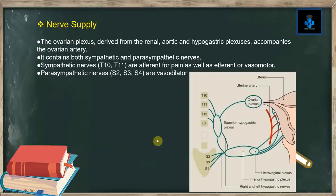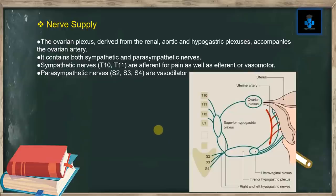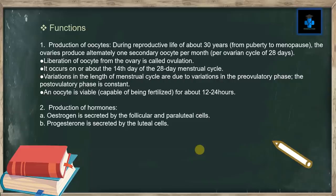Nerve supply: the ovarian plexus, derived from the renal, aortic, and hypogastric plexuses, accompanies the ovarian artery. It contains both sympathetic and parasympathetic nerves. Sympathetic nerves, which are T10 and T11, are afferent for pain as well as efferent or vasomotor. Parasympathetic nerves, S2, S3, and S4, are vasodilator.